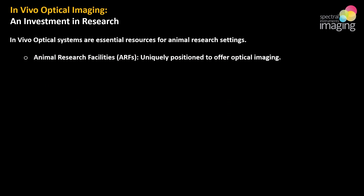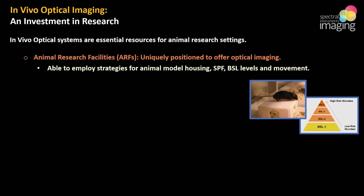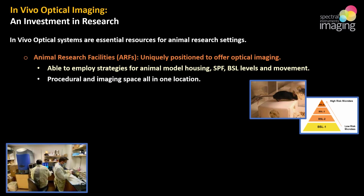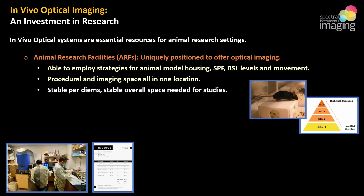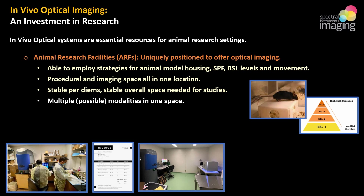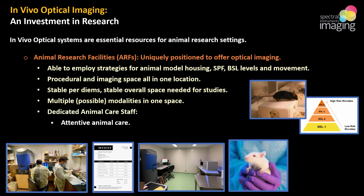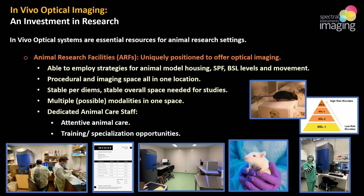Animal research facilities have some advantages for system placement over individual lab space and over core facilities outside of an animal housing area. Animal facilities can employ specific housing schemes, offer SPF or BSL levels and movement paths, and quarantine space. Most have dedicated procedural space that can be associated with dedicated imaging space, making data collection more efficient. Animal facilities may benefit from stable per diems and smaller yet more steady space needs. If space allows, multiple modalities may be in-house, making crossover use more efficient. Facility staff will have eyes on the colony, able to assist with delicate health statuses, anesthesia issues, and procedure recovery. Techs may also have opportunities to train and specialize in optical imaging procedures, adding variety and new capabilities to their skill set.